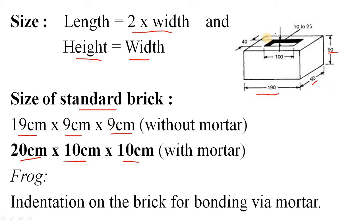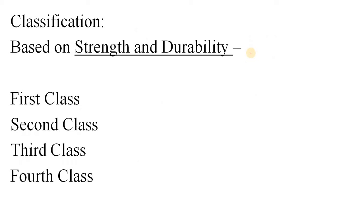On the top, you can see an indentation, which is known as a frog. Why is it provided? Simply to provide bonding between two bricks via mortar. The indentation acts as a shear key. Normally in foundations, we provide shear keys to resist the column from sliding. The same way, we use this indentation - fill it with mortar, and that mortar attaches to the next brick. In this way, the frog maintains continuity between the bricks.